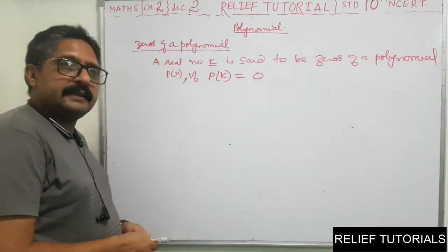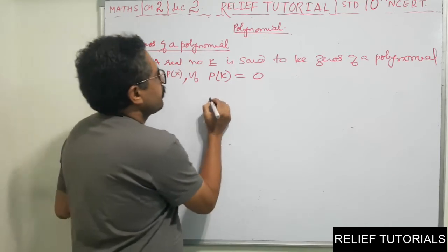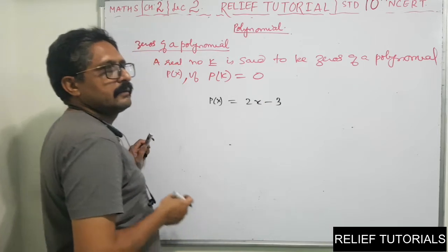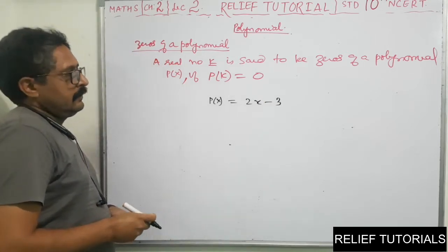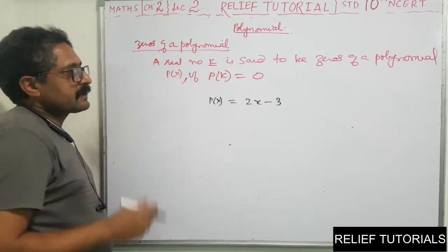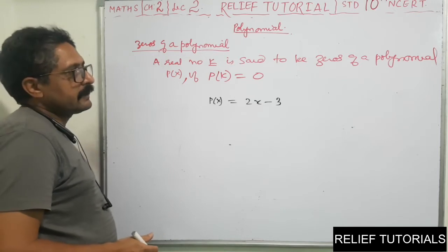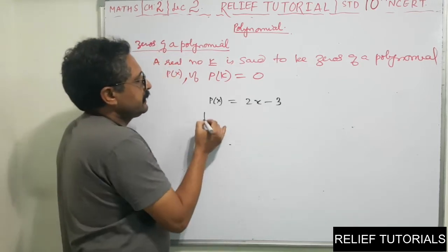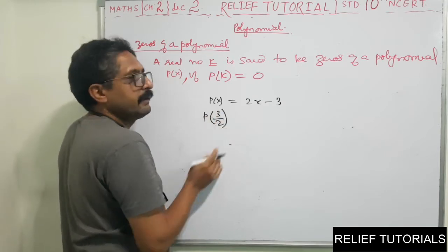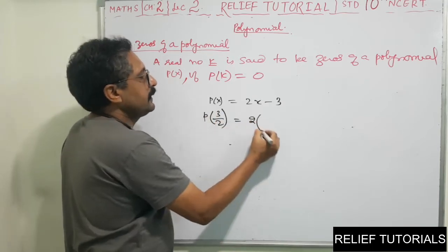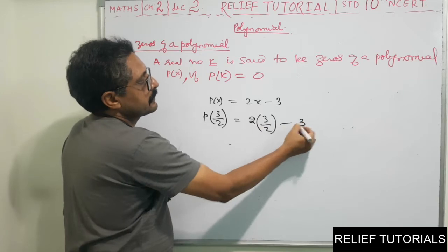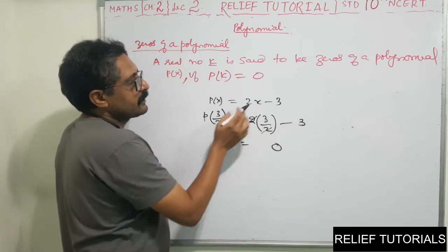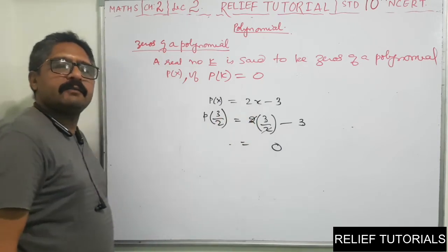Now we discuss linear polynomials. Take P of X equals 2X minus 3. To find the zero, we compute P of 3 by 2: 2 into 3 by 2 minus 3 equals 3 minus 3 equals 0. So 3 by 2 is the zero of this polynomial.